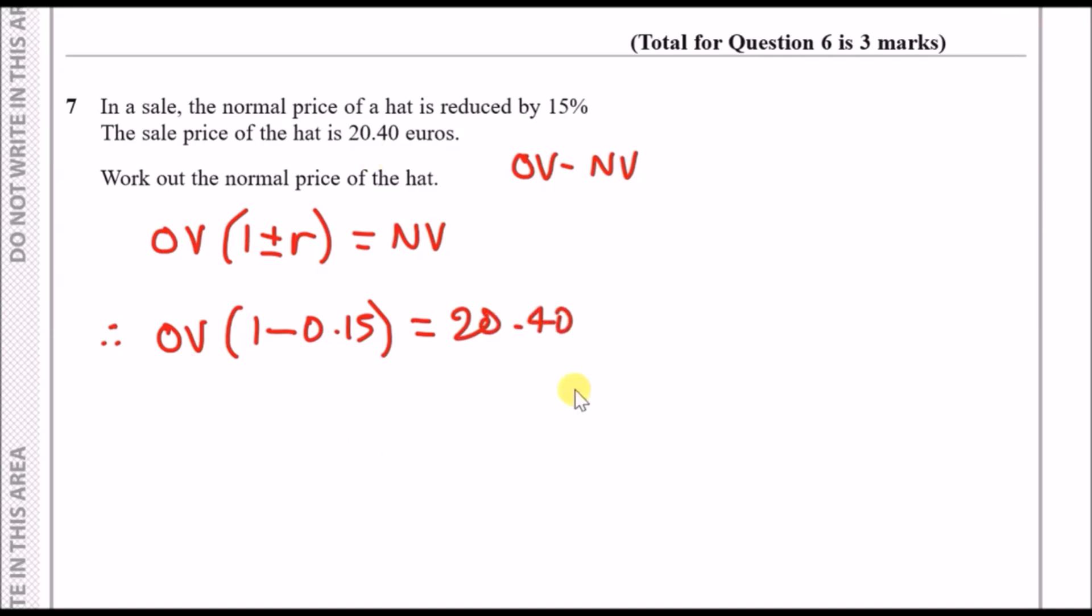All you literally have to do is make OV the subject. To do that we just divide this bracket across, so you're going to have OV equals 20.40 over, well 1 minus 0.15 is actually 0.85. Put this in your calculator and you're going to get an actual normal price of 24 euros.